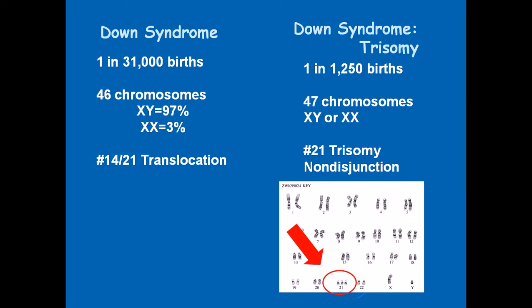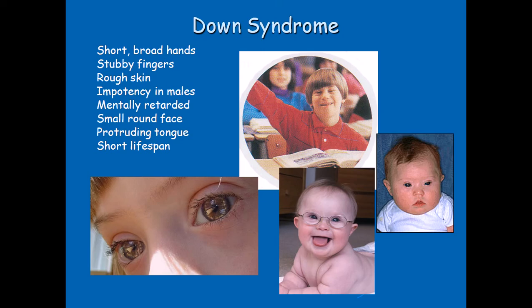Another case of Down syndrome involves trisomy of chromosome 21 — three copies of chromosome 21 instead of two. Each pair of chromosomes should have one from the father and one from the mother, but here there are three chromosomes because one is duplicated. This is called trisomy 21, again a result of non-disjunction during meiosis. Symptoms include short broad hands, stubby fingers, rough skin, impotency in males, mental retardation, a small round face, and short lifespan.